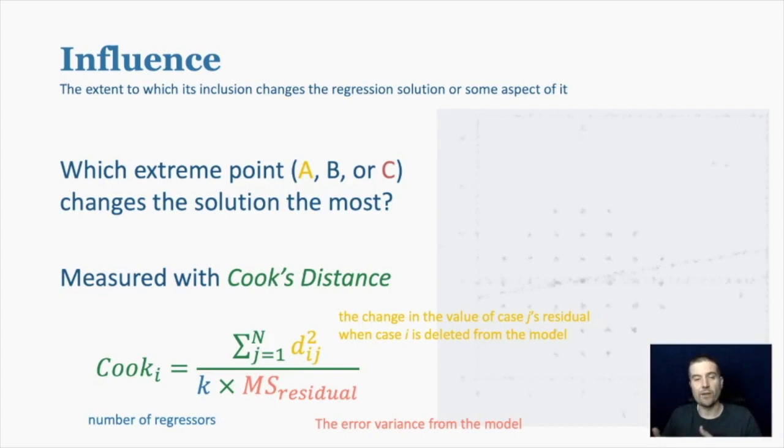If the model changes a lot where we pull this out and suddenly everyone's residuals are very different than what they were before, we're going to have a high Cook's distance, which means that that data point is very influential. That one point is changing the results of the whole model. If it's not highly influential, then the residuals, when you remove that one point, the line won't change very much, so the residuals really won't move and you'll have a really low Cook's D.